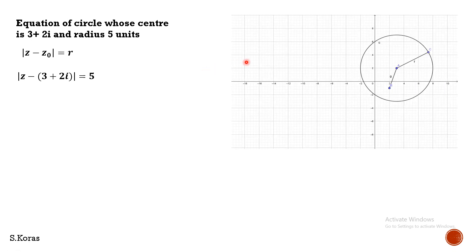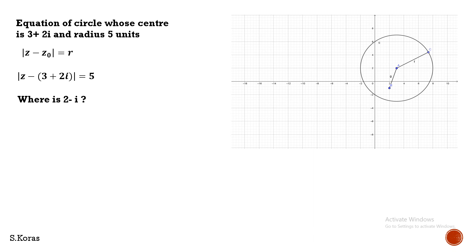From the diagram, the radius is 5 and the center is 3 plus 2i — that is, real part 3 and imaginary part 2, so center is at (3, 2). The point 2 minus i lies at real part 2 and imaginary part minus 1. From the diagram it is very well clear that the point is inside the circle. Now we have to prove this mathematically using complex number techniques.